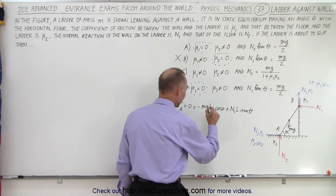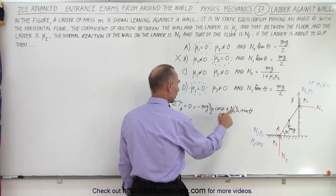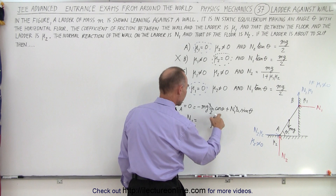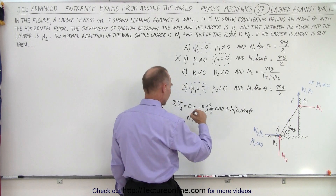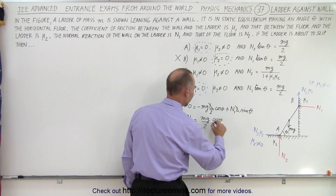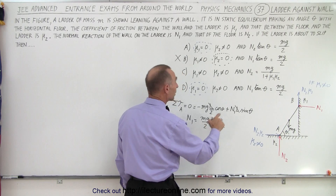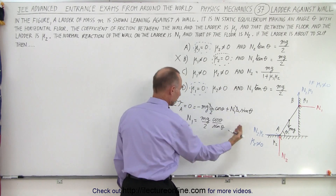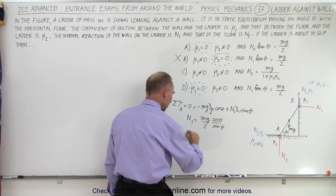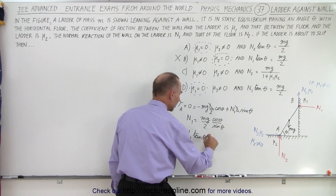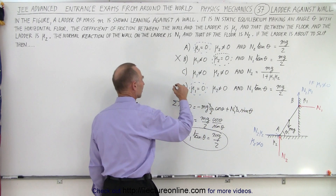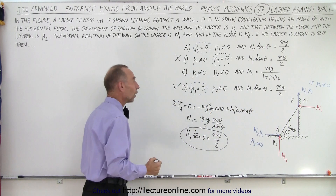Notice that L cancels, and we can solve for N1. Bringing terms over: N1 equals Mg over 2 times (cosine theta divided by sine theta). That's the cotangent of theta. Bringing it over to the other side, it becomes N1 times tangent theta equals Mg over 2. And notice that matches answer D, so D is one of the correct answers.